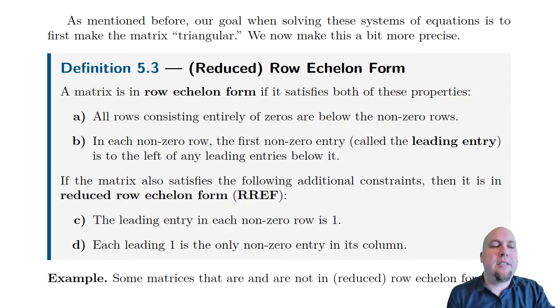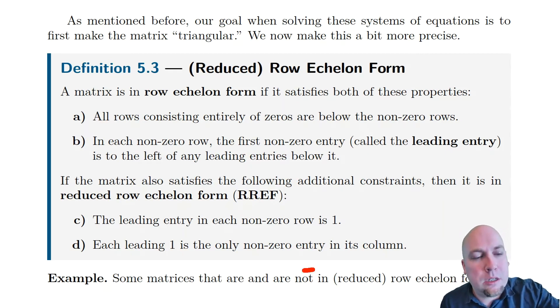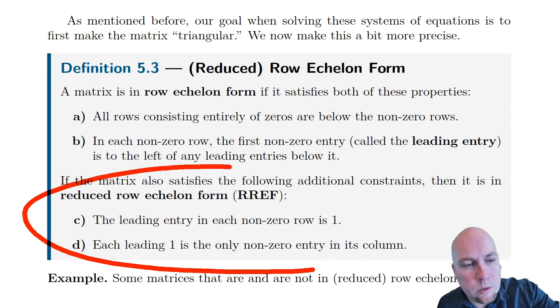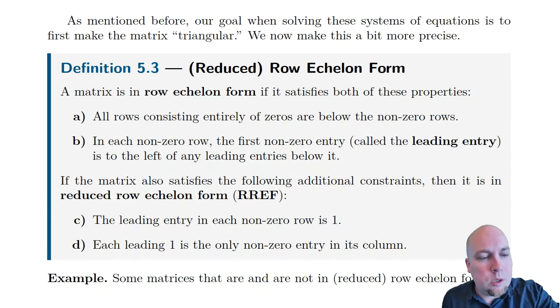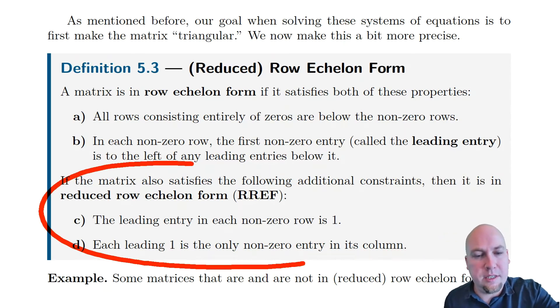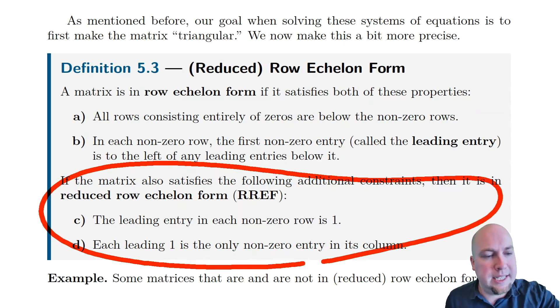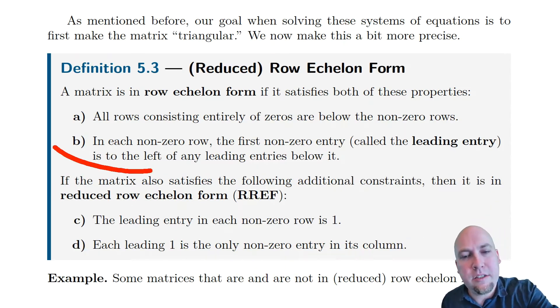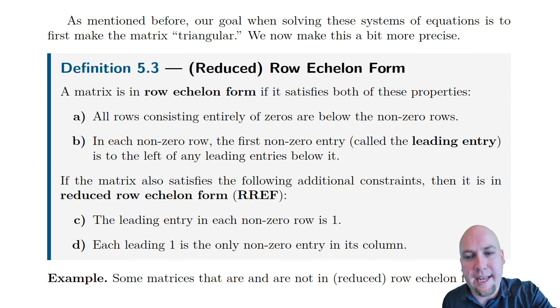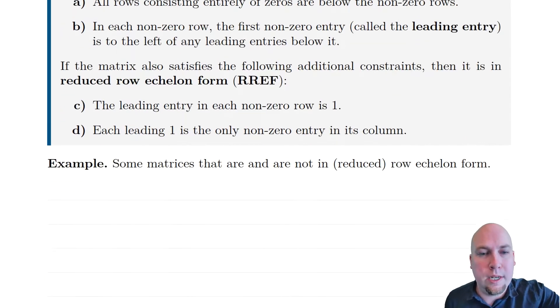There's also a slightly more restrictive form called reduced row echelon form. We'll come back to that in a moment. For now, I'm going to skip over properties C and D and just focus on properties A and B, which are what make a matrix have row echelon form.